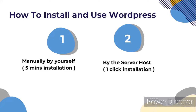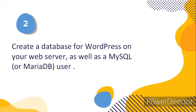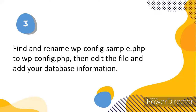So how can we install WordPress manually? There are five major steps to install WordPress on your web server. The first step is to download and unzip the WordPress package. The second step is to create a database for WordPress on your web server, as well as a MySQL or MariaDB user. The third step is to find and rename wp-config-sample.php to wp-config.php, then edit the file and add your database information.